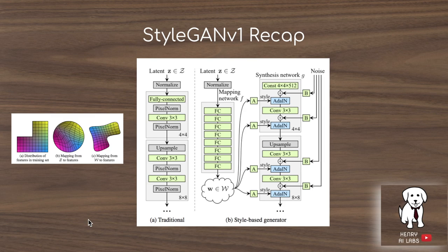Before diving into the changes in StyleGAN version 2, let's recap some of the characteristics of StyleGAN 1 that make it different from other generative adversarial network architectures. The most notable is this mapping network from the latent vector Z into W space. The latent vector Z is some random vector that is then passed through eight fully connected layers and mapped into W space. The W latent code is then used to control the features in the generator by using these adaptive instance normalization layers.